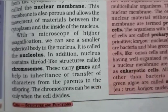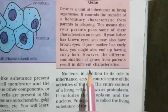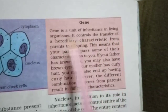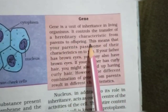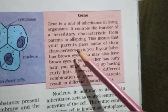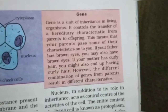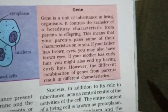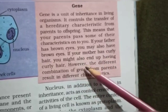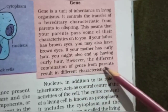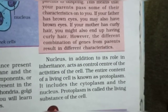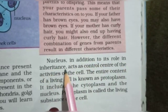A gene is a unit of inheritance in living organisms. It controls the transfer of hereditary characteristics from parents to offspring. This means your parents pass some of their characteristics onto you. For example, if your father has brown eyes you may also have brown eyes. However, different combinations of genes from parents result in different characteristics, which is why children can look different from each parent. The nucleus also acts as the control center of all the activities of the cell.